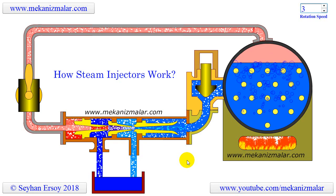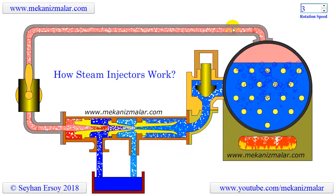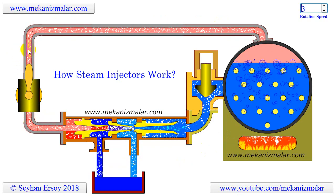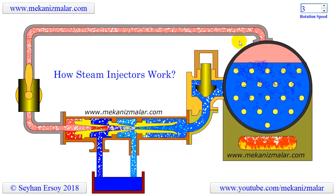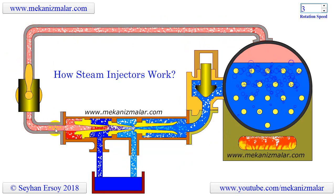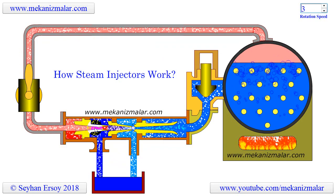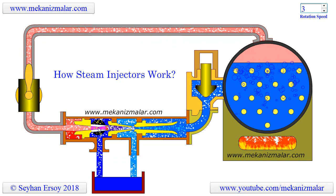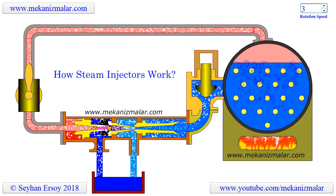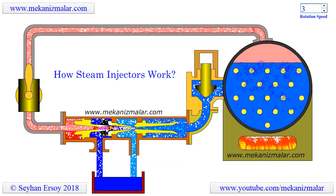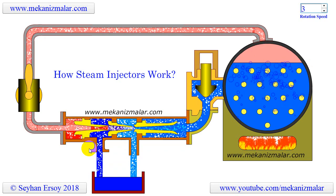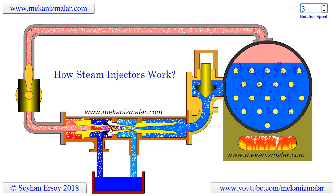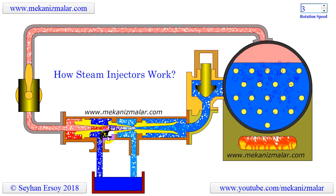Here is how a steam injector works. Steam taken from the boiler is sent to the injector with high pressure and low velocity. This flow is indicated by the red background with white dots showing the direction of flow. The flow is then directed to the converging-diverging steam cone. In the cone's converging section, the steam velocity is increased to the speed of sound. At the diverging section, the pressure is further reduced and converted to kinetic energy, where steam moves faster than the speed of sound. By the time steam leaves the cone, its speed is much faster than the speed of sound, but its pressure is below atmospheric pressure. The flow is shown here with a light red background.